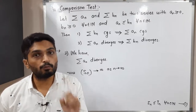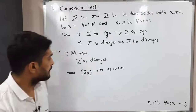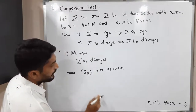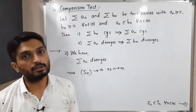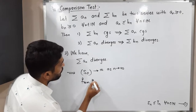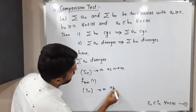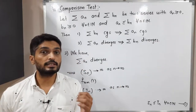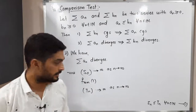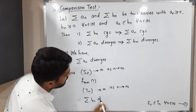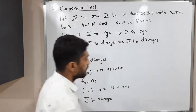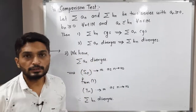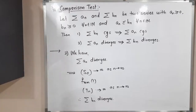From Inequality 1, Sₙ ≤ Tₙ for all n. Since Sₙ diverges to infinity, the upper sequence Tₙ must also diverge to infinity as n tends to infinity. Since Tₙ is the sequence of partial sums of summation bₙ and it diverges, the series summation bₙ also diverges. This completes the proof of the second part, and thereby the full proof of the Comparison Test.